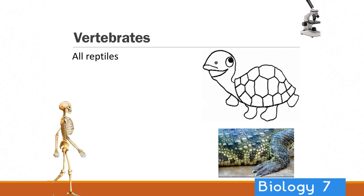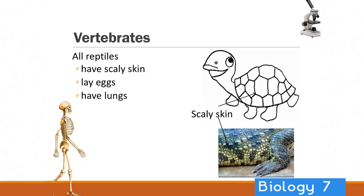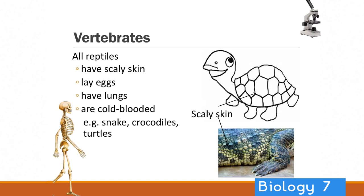Now let's talk about reptiles. We've got a turtle and a crocodile. They've got scaly skin — snakes can be reptiles as well. They lay eggs, so even though turtles live in the ocean, they still need to go to land to lay eggs. They also need to breathe from the surface, so they have lungs as well. But they are cold-blooded, which is interesting. That's why snakes like to lay out in a sunny area to warm themselves and they're not very active when it's cold.